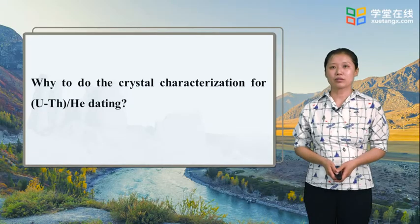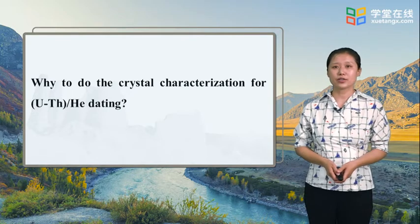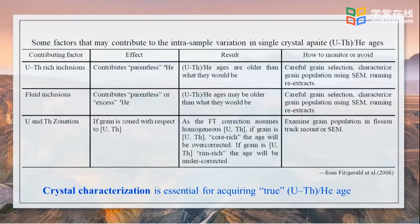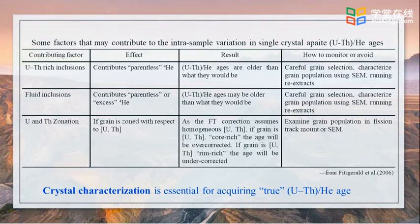You may ask, why do we need to do crystal characterization for uranium-thorium-helium dating? Let's explain it by this table. For example, inclusions — including uranium-thorium-rich mineral inclusions and fluid inclusions — will contribute parentless or excess helium, but not uranium and thorium. As a result, it will make uranium-thorium-helium ages older than they would be if inclusions were not present.